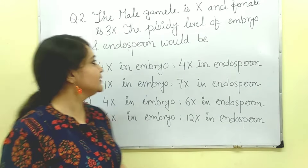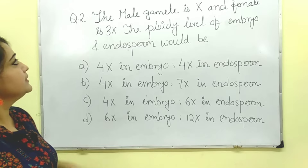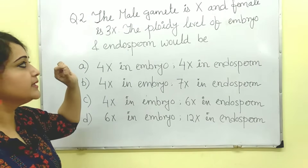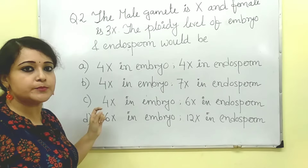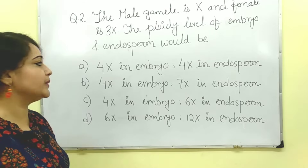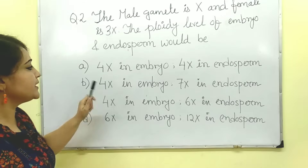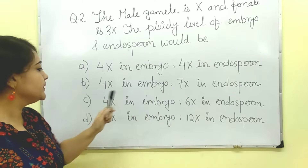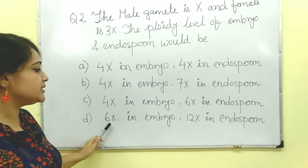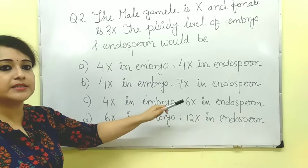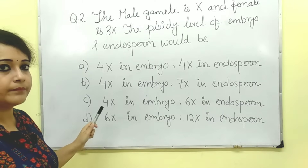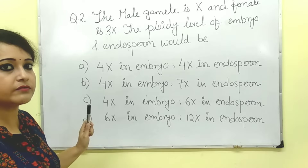Let us begin question number 2. The male gamete is X and female gamete is 3X. The ploidy level of embryo and endosperm would be: option A — 4X in embryo, 4X in endosperm; option B — 4X in embryo, 7X in endosperm; option C — 4X in embryo, 6X in endosperm; option D — 6X in embryo, 12X in endosperm. Please take a screenshot of this question, then I will start solving it.